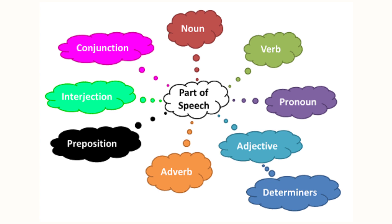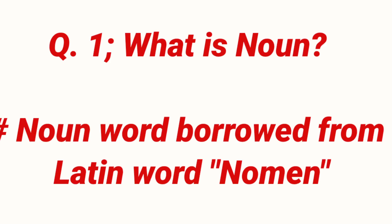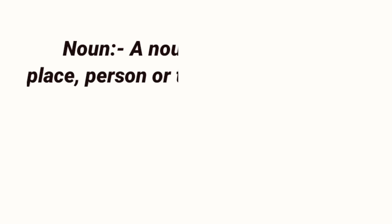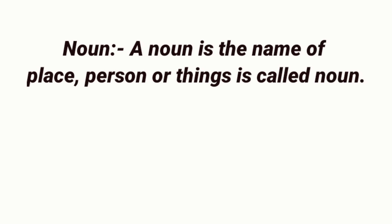Parts of speech mein jo khaas aur number one mein aata hai woh hai noun. Noun word ko Latin word 'nomen' se liya gaya hai. Noun ko sabse pehle 14th century mein defined kiya gaya tha. You may have remembered the definition of noun like this: 'A noun is the name of a place, person, or thing is called noun.'